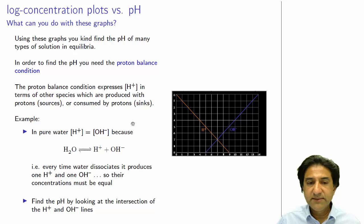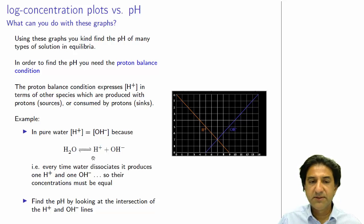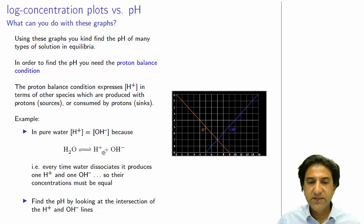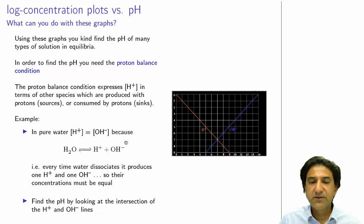Let's look at water, the simplest case. Water dissociates to form H⁺ and OH⁻, so water is a source of H⁺. Whenever we see an OH⁻ in solution, we will have to see an H⁺ partner, because they both came from the same source. So the concentration of OH⁻ has to equal the concentration of its partner H⁺. That's the proton balance condition: H⁺ concentration equals OH⁻ concentration.